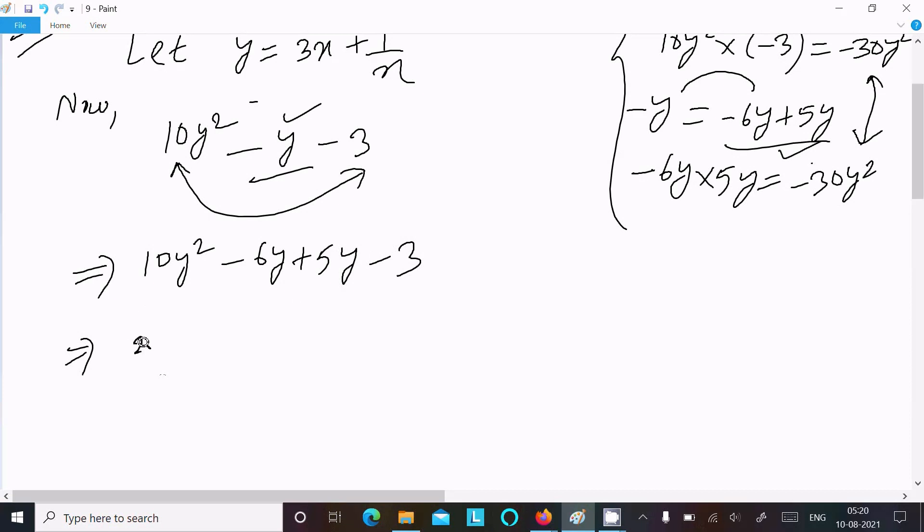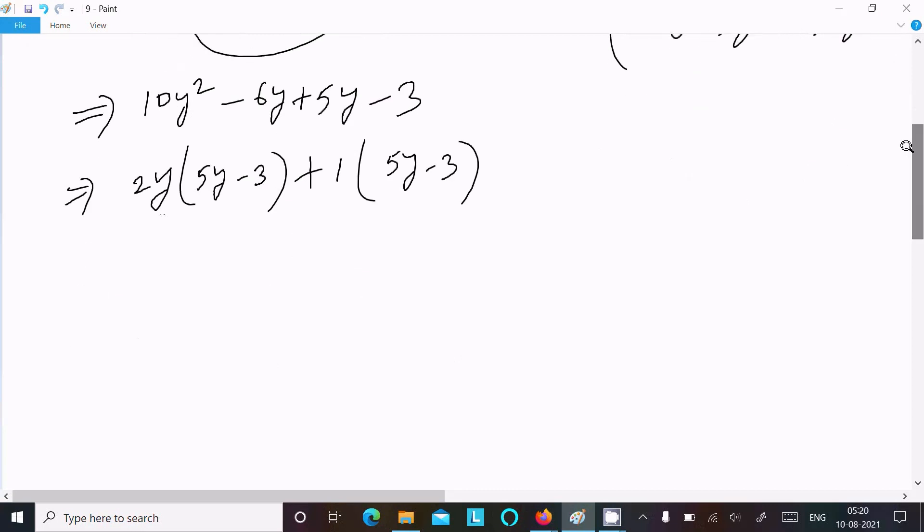Take the common, take the common. 2y taking the common, this here 5y minus 3. Here 1 is the common, 5y minus 3. After that 5y minus 3, take the common.